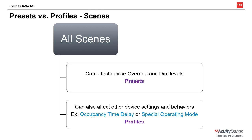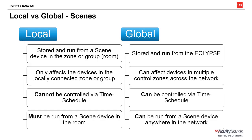In nLight, all scenes are broken down into two types. One type only affects lights' on, off, and dim levels — these are called preset scenes. The other type of scene can affect other device behaviors by changing their current settings. For example, changing an occupancy sensor's time delay, or a light fixture's special operating mode. Both types of these scenes can either be local or global.